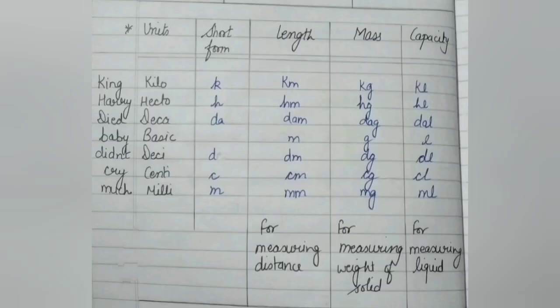Then we have studied about various units of length, mass and capacity using our statement King Harry died, baby didn't cry much. The full form for the units are: kilo, hecto, deca, basic, deci, centi, milli. Using these units we will make all the units of length, mass and capacity. So you need to learn all these units.